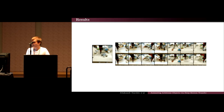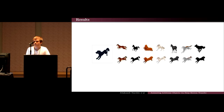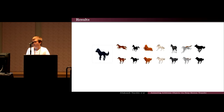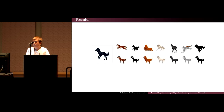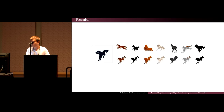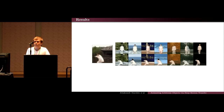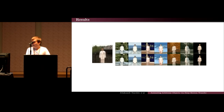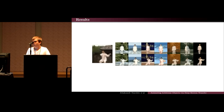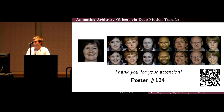We also test on the dataset of moving cartoon animals — challenging because every animal has very different shapes and colors, yet our method generates plausible animation. Finally, we test on the dataset of humans performing Tai Chi moves — the most challenging dataset because humans can move arbitrarily in 3D with lots of self-occlusion. We are still able to generate realistic videos, and the motion is modeled independently for each arm and leg. We also apply our method at higher resolution. Please welcome our poster number 124.